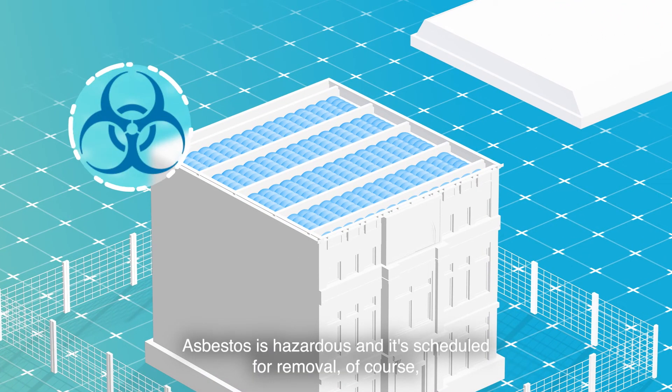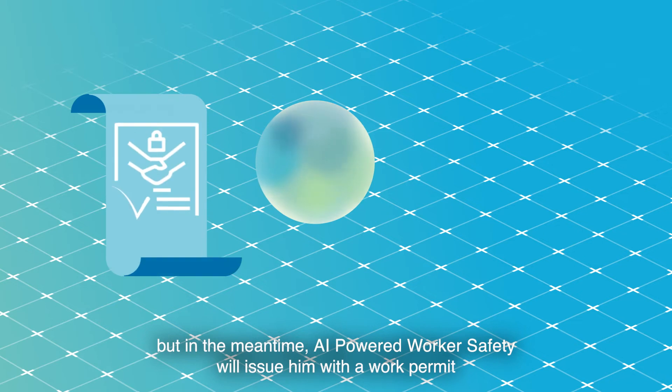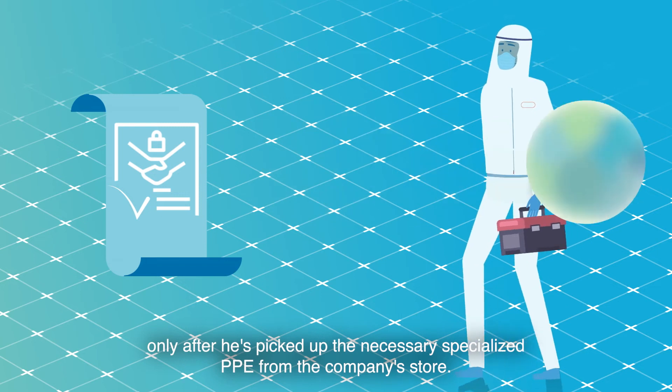Asbestos is hazardous and it's scheduled for removal of course, but in the meantime AI-powered worker safety will issue him with a work permit only after he's picked up the necessary specialized PPE from the company store.